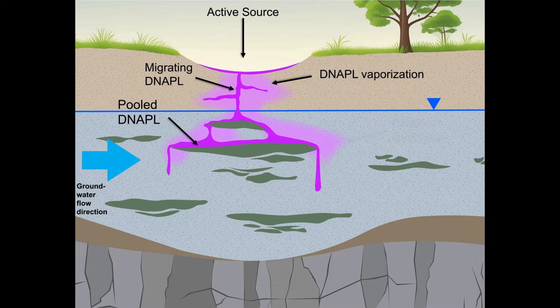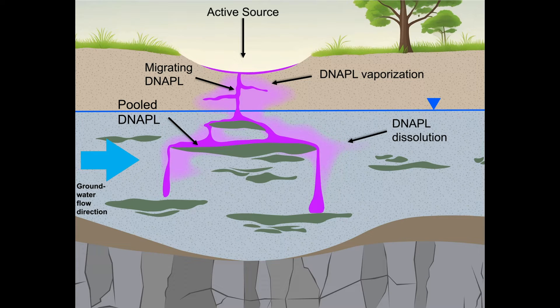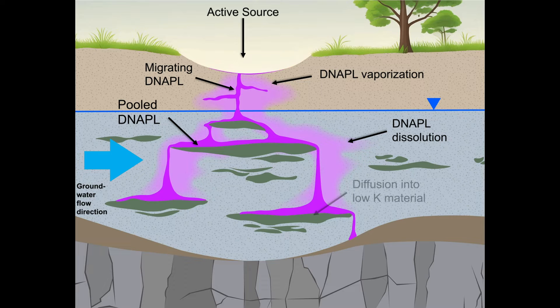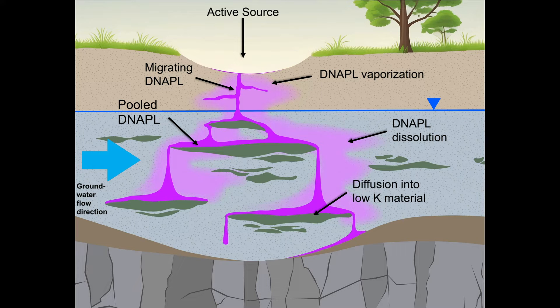When D-NAPL encounters a lower hydraulic conductivity layer, it pools, diffuses into the layer, and flows laterally atop the layer, then migrates downward again after reaching the edge of the layer.